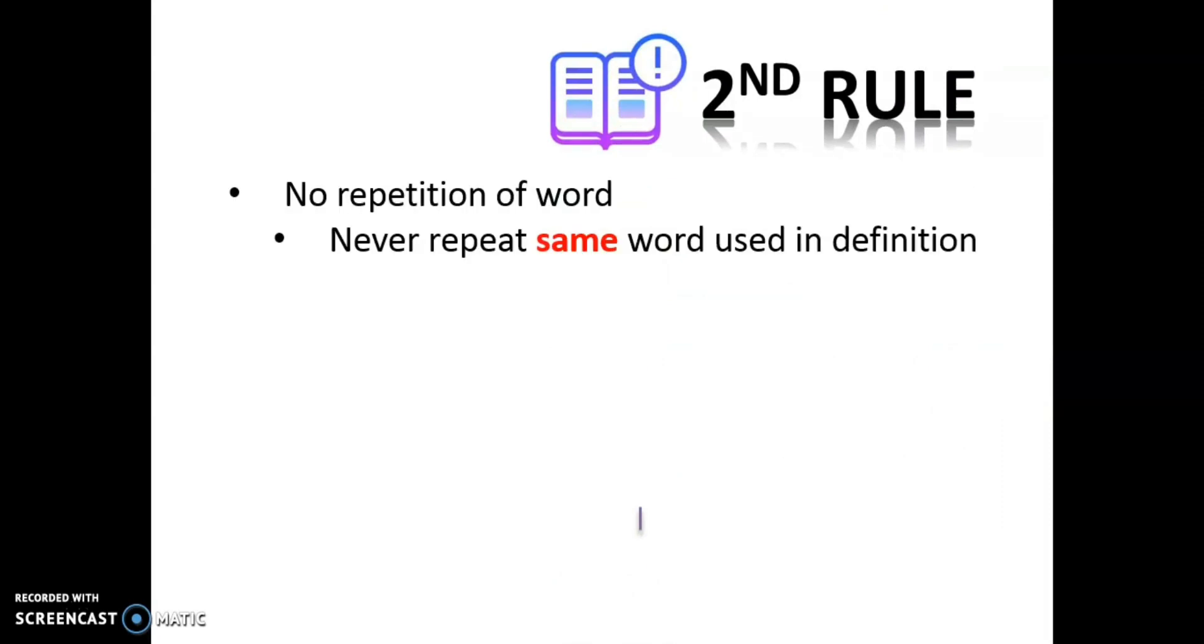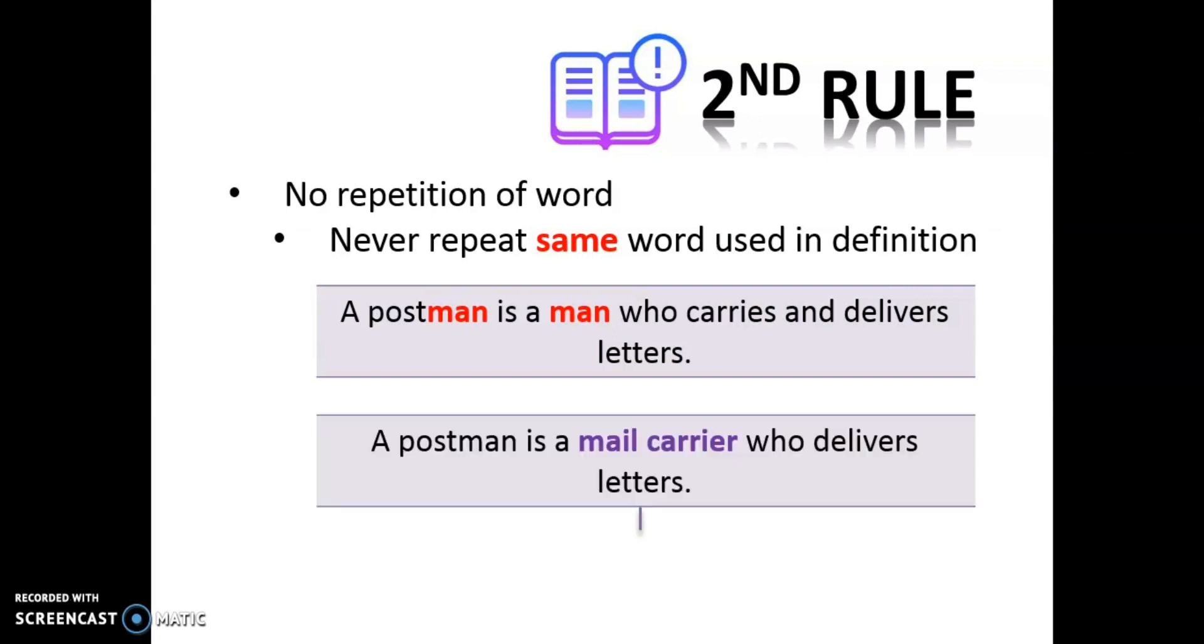The second rule: do not repeat the word. Never ever repeat same word used in definition. For example, a postman is a man who carries and delivers letters. You are just repeating the word man in your definition. You can make your short formal definition better when you mention it this way: a postman is a male carrier who delivers letters. Basically, this new definition of a postman gives new information to the work of a postman for much more better because it gives detailed information about the job of a postman.